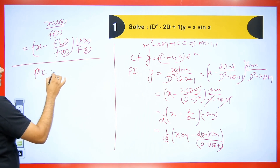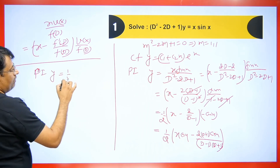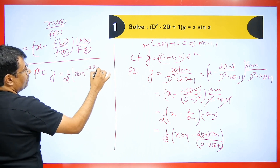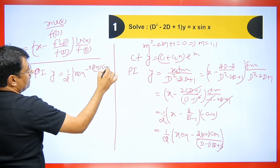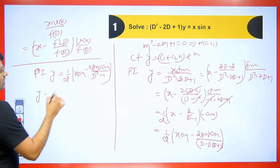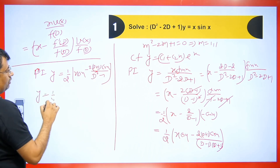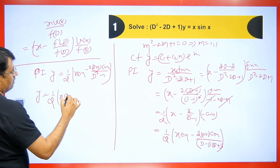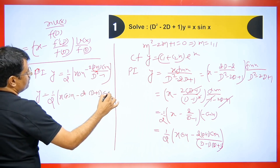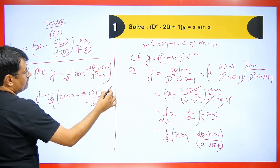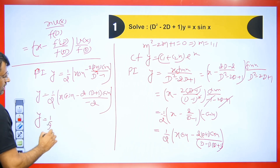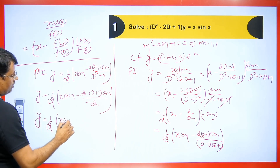So what will be the value of PI here? y = (1/2)·[x·cos(x) − 2·(D+1)·cos(x) / (D²−1)]. Wherever D² appears, we again put −1. So (1/2): this becomes x·cos(x) minus 2·(D+1)·cos(x). The (−1) and (−1) become (−2), and this (−2) and (−2) cancel out. Now this will become (1/2)·x·cos(x) plus...